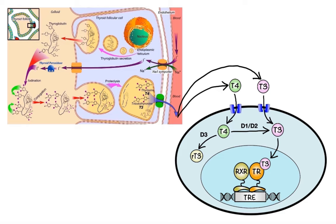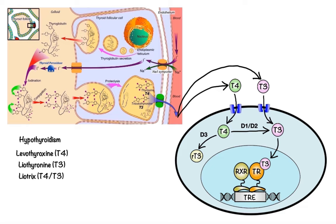The drugs used in treatment of thyroid disorders can be generally divided into two groups. The first group includes agents that treat hypothyroidism, the condition in which there is inadequate production of thyroid hormones. Medications include levothyroxine, a synthetic version of T4; liothyronine, a synthetic version of T3; liotrix, a synthetic combination of T4 and T3; and desiccated natural thyroid, a natural thyroid hormone prepared from dried porcine thyroid, containing a mix of T4 and T3.